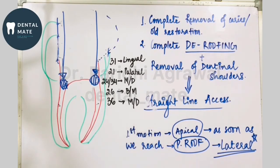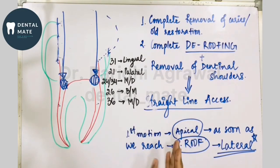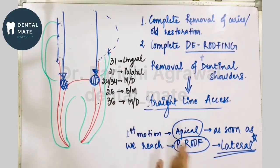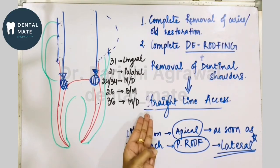These shoulders must be considered while preparing the access cavity opening. There should be complete de-roofing and complete removal of dentinal shoulders. The aim is to have a straight-line access. First remove all caries. If the caries is a mesio-occlusal caries, your approach should be from the mesial direction, removing all caries from that direction, then searching for the distal orifices. The approach is decided based on the location of the caries or old restoration.